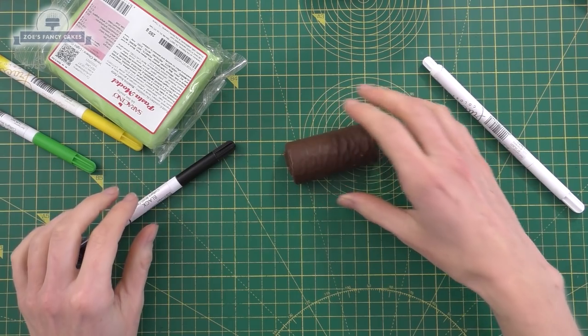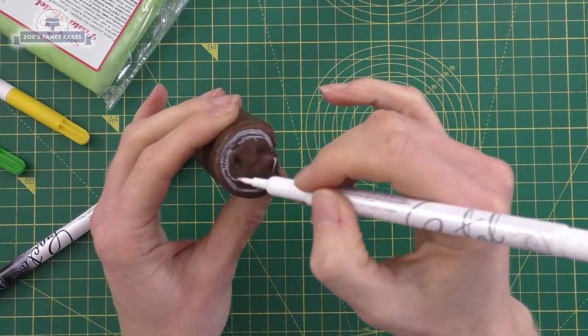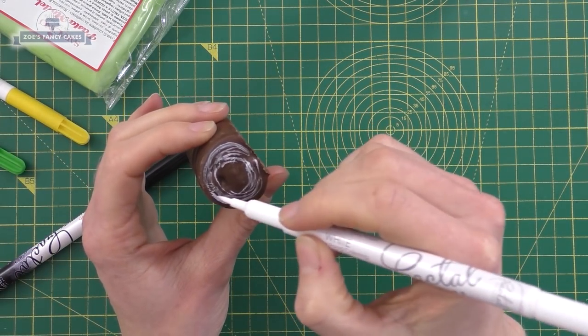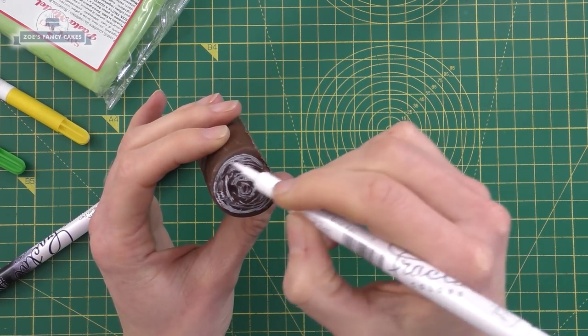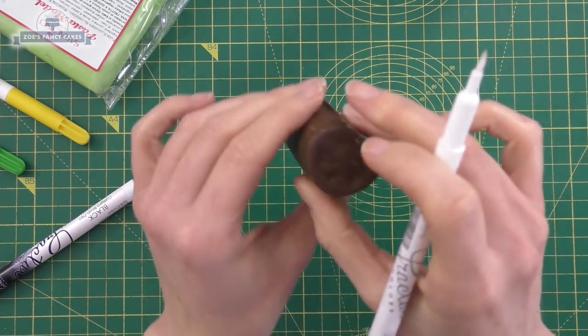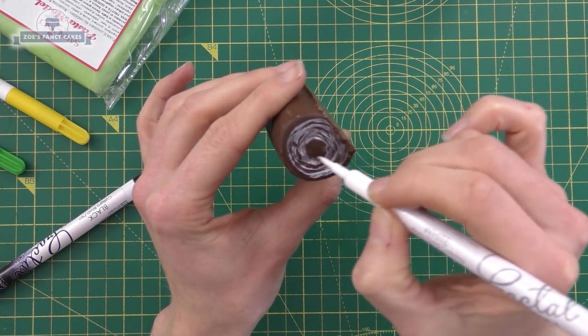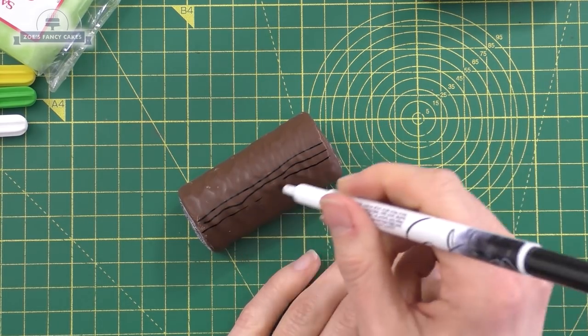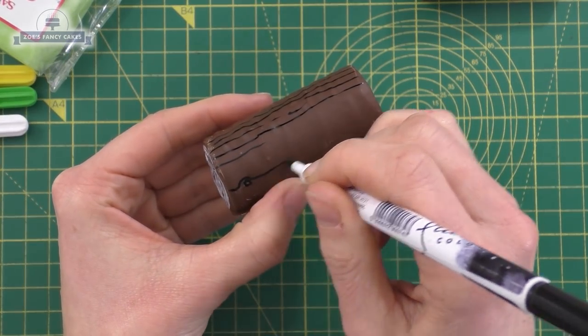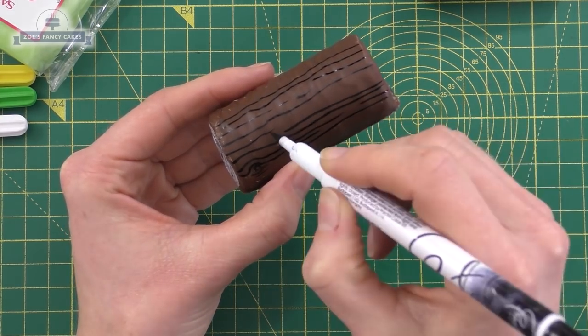Start with the chocolate log and add some edible pens. These are edible pens - please don't use a normal felt pen on something you're going to be eating. We're drawing some white lines in circles for the end of the log, then some lines in black across the top. Horizontally, maybe add the odd little knot with a circle and some lines going around that circle.